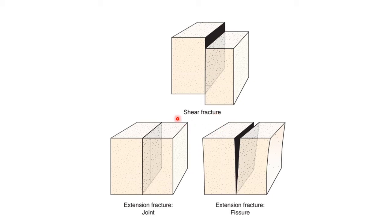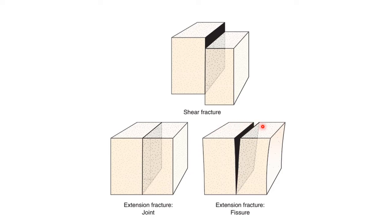Joints and faults divide rocks into blocks whose size and shape must be taken into consideration for engineering, quarrying, mining, and geomorphological purposes. Another type of extensional fracture is known as a fissure.